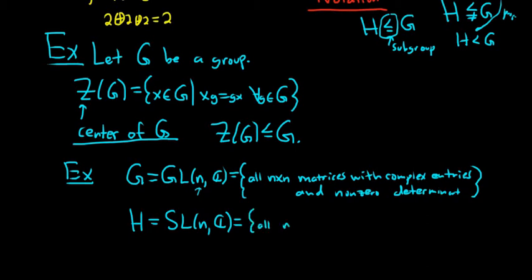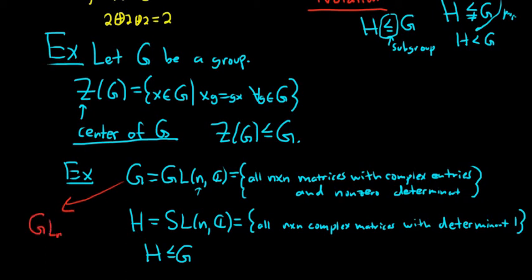Then we'll let H be equal to SL n of ℂ. This is called the special linear group. This is all n by n complex matrices, that means that the entries are complex numbers, with determinant 1. Very important group. So H is a subgroup of G. So the special linear group is a subgroup of the general linear group. Sometimes you'll see different notation for this, by the way. Sometimes for G, you'll see GL n of ℂ, and then for H, you'll see SL n of ℂ, just depending on the author and what you are reading.